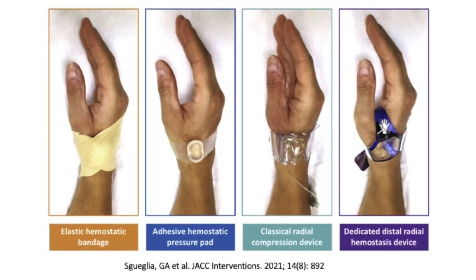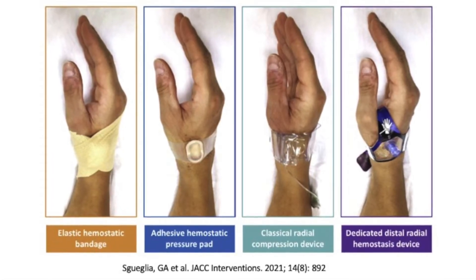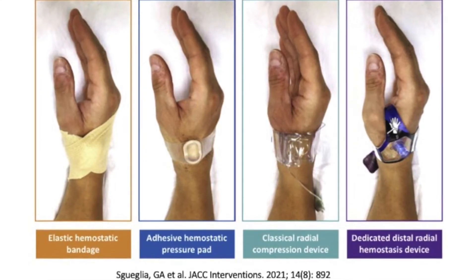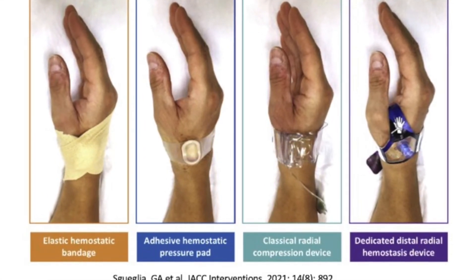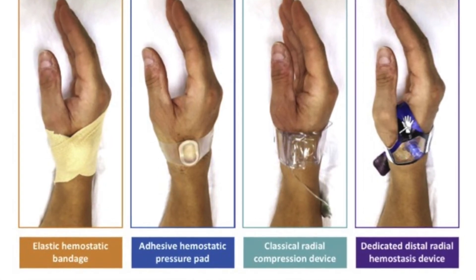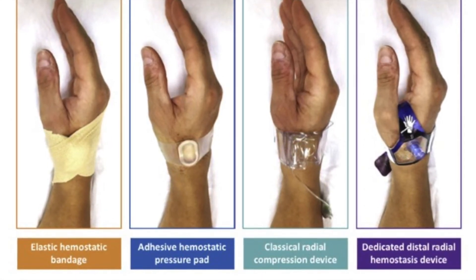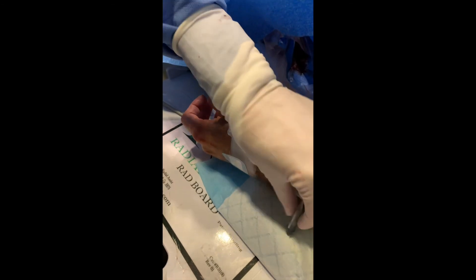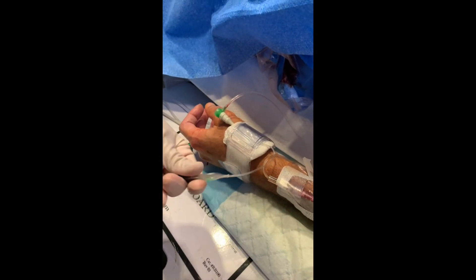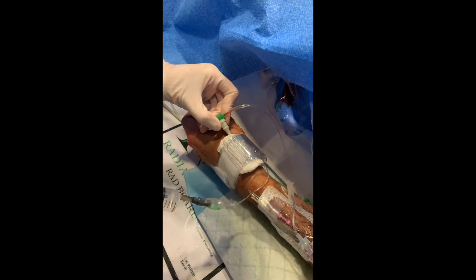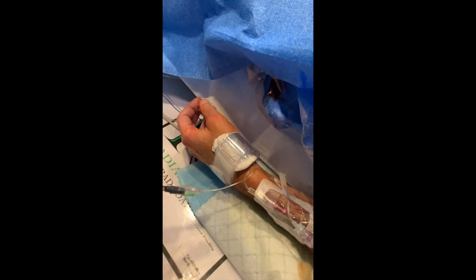There are a number of dedicated distal radial access hemostasis devices available — here are a few examples. However, you can perform a distal radial access procedure completely with conventional radial equipment. Here we use a TR band, and if you have problems with the device sliding, you can place a gauze under it to secure it better.